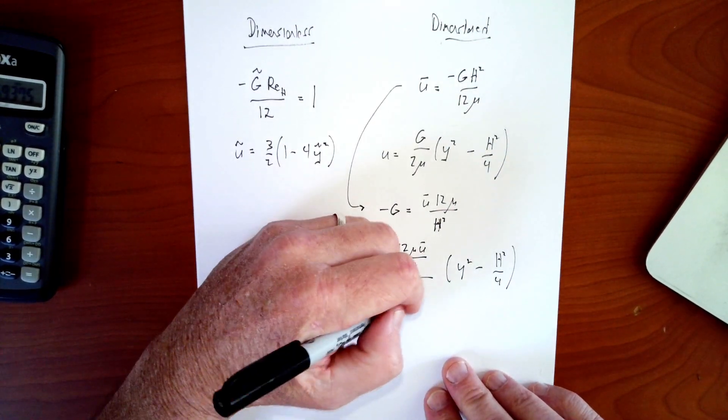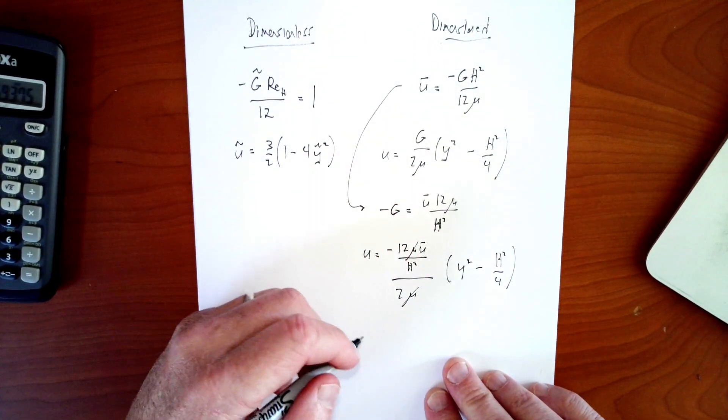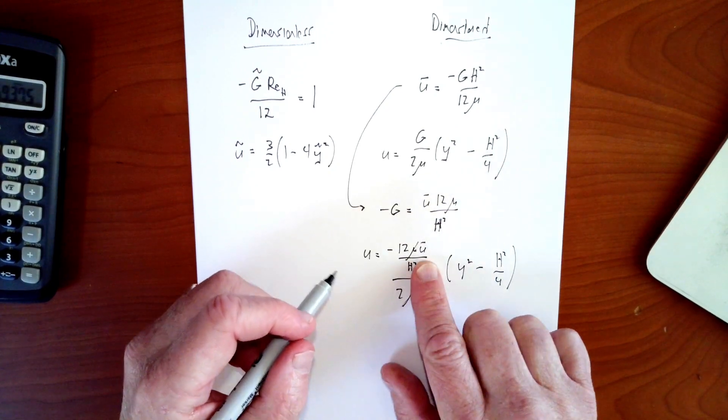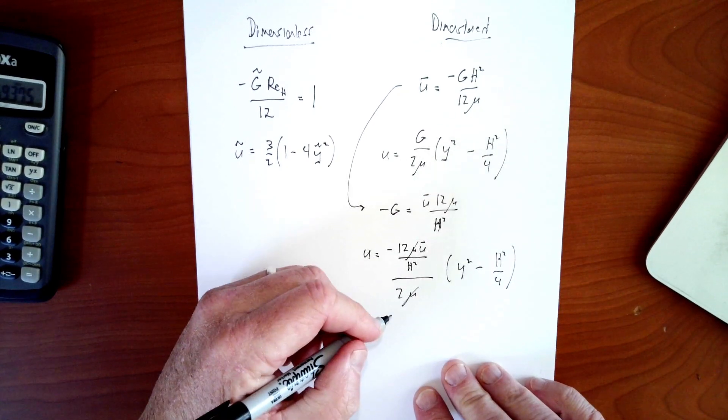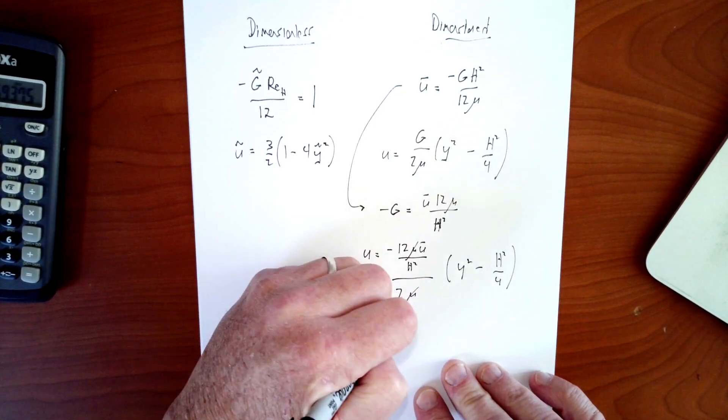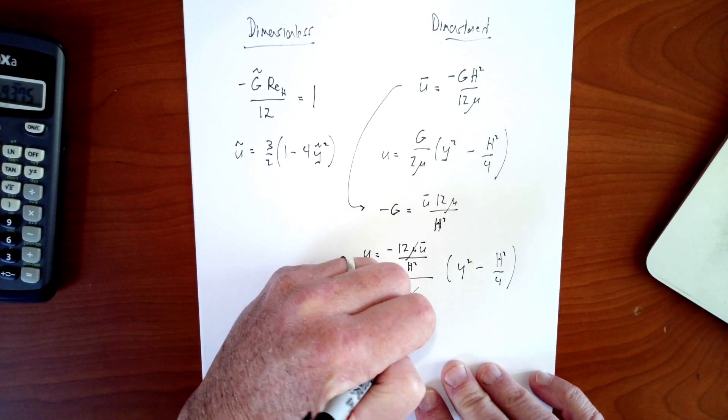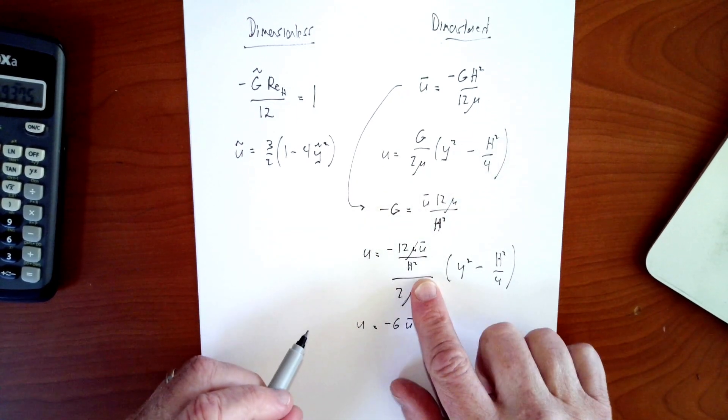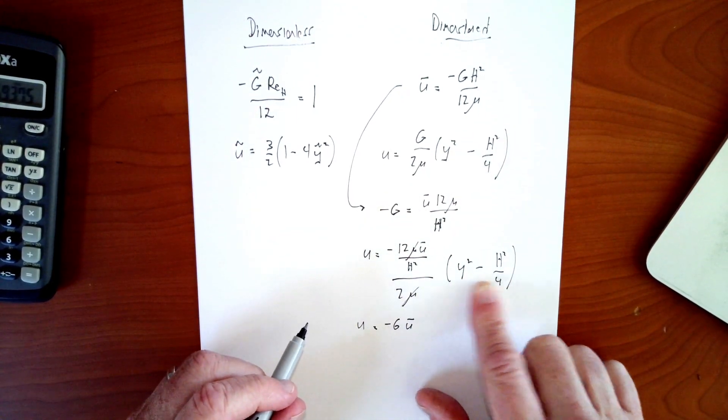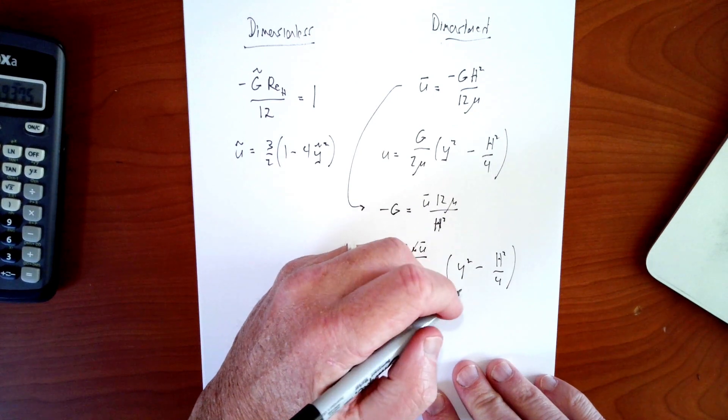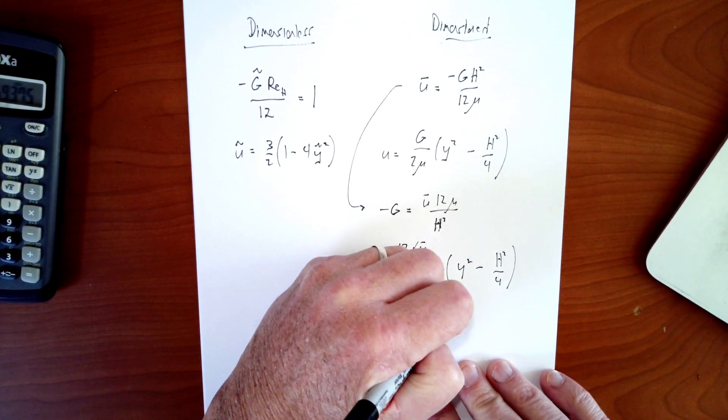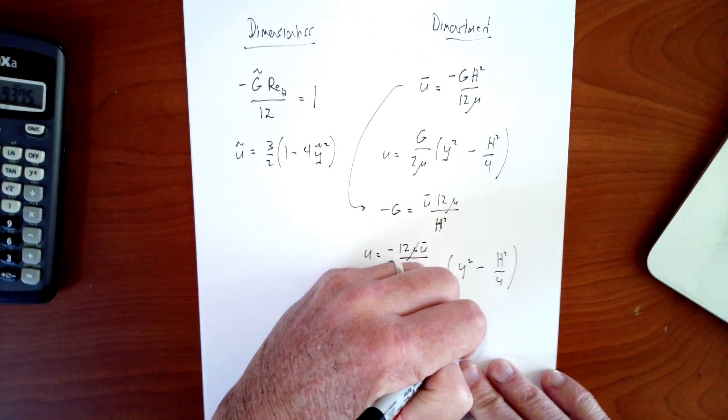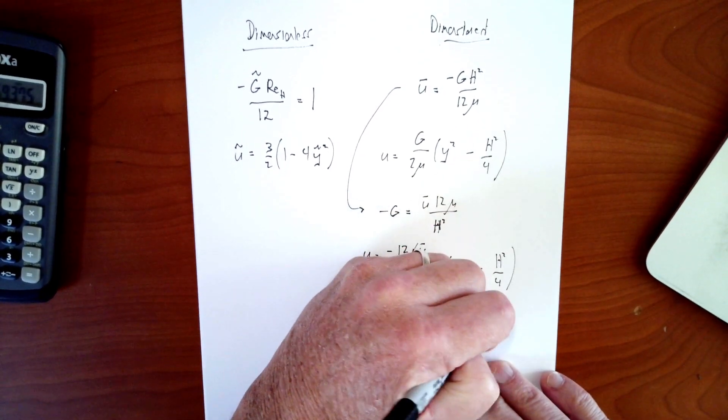All right, so what's going to happen here? These mu's are going to cancel each other. This is u bar. So I have u is equal to, obviously, I'm going to get rid of that 12 over 2 and get a 6. So I have negative 6 u bar and I'm going to put the h squared inside. So I'm going to say, let's do this as here is going to be y squared over h squared. And this is minus 1 over 4, it looks like to me.